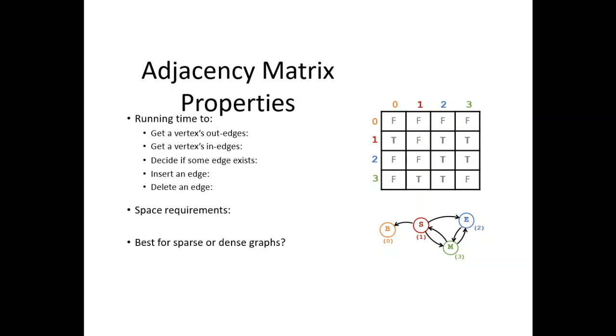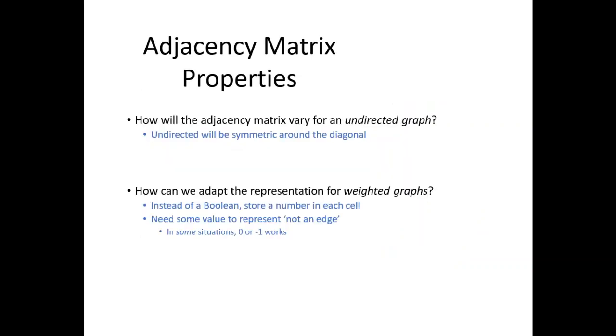Adjacency matrix properties: We have the running time to get all vertices of the edge and get all vertices in the edge. Of course, we have to decide to insert or delete. But how will the adjacency matrix derive from undirected graphs? For undirected graphs, once will be symmetric to the diagonal. We can adapt the representation for weighted graphs and set a boolean in the store number itself. We need some values to represent an edge.